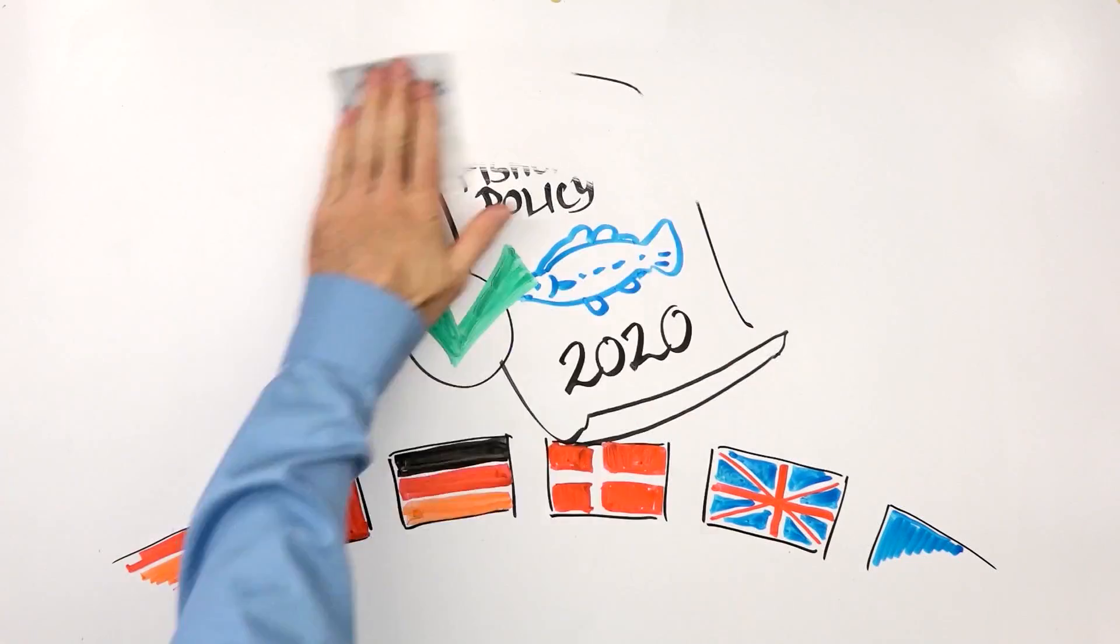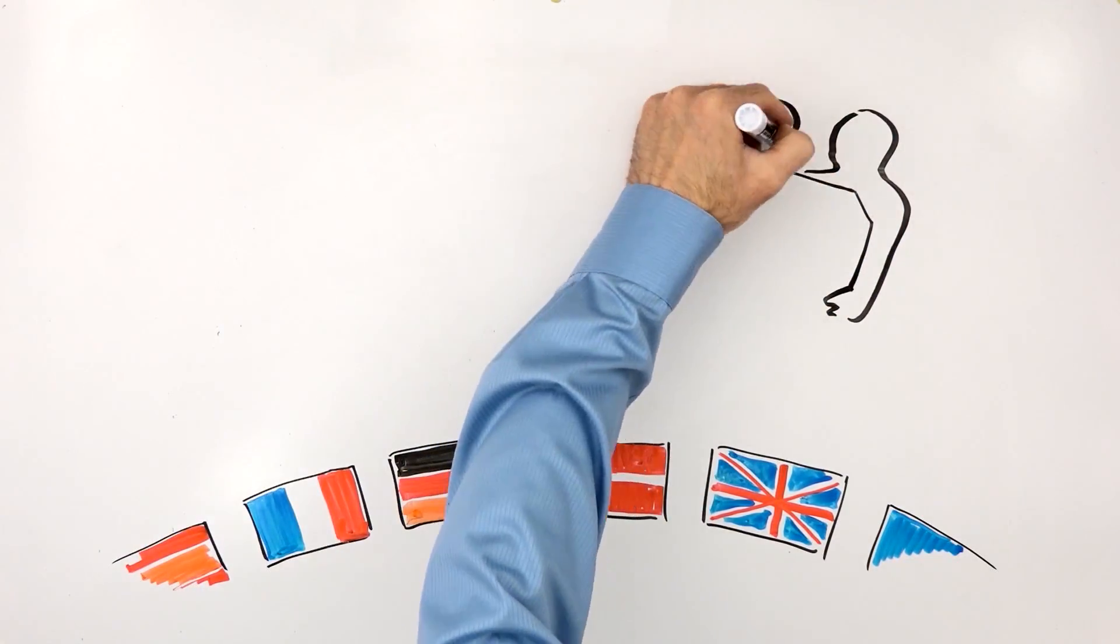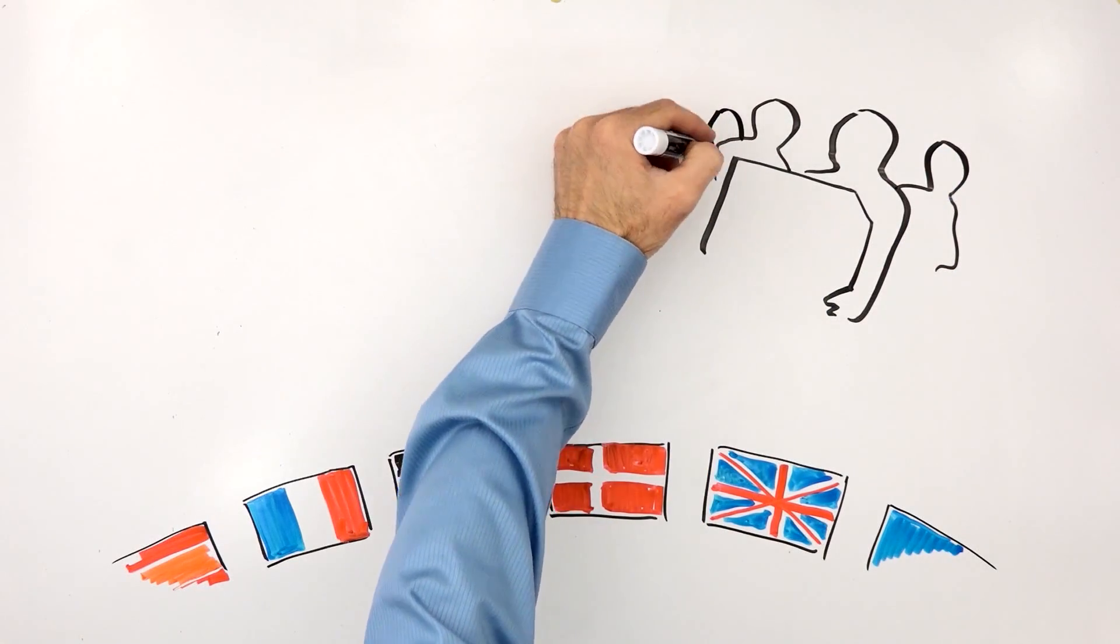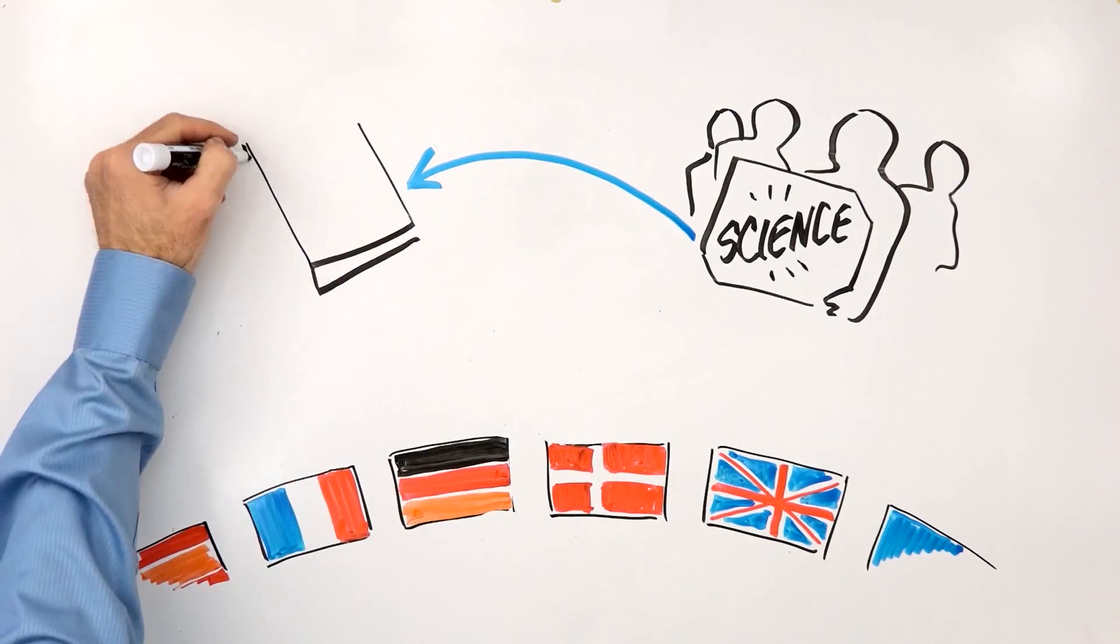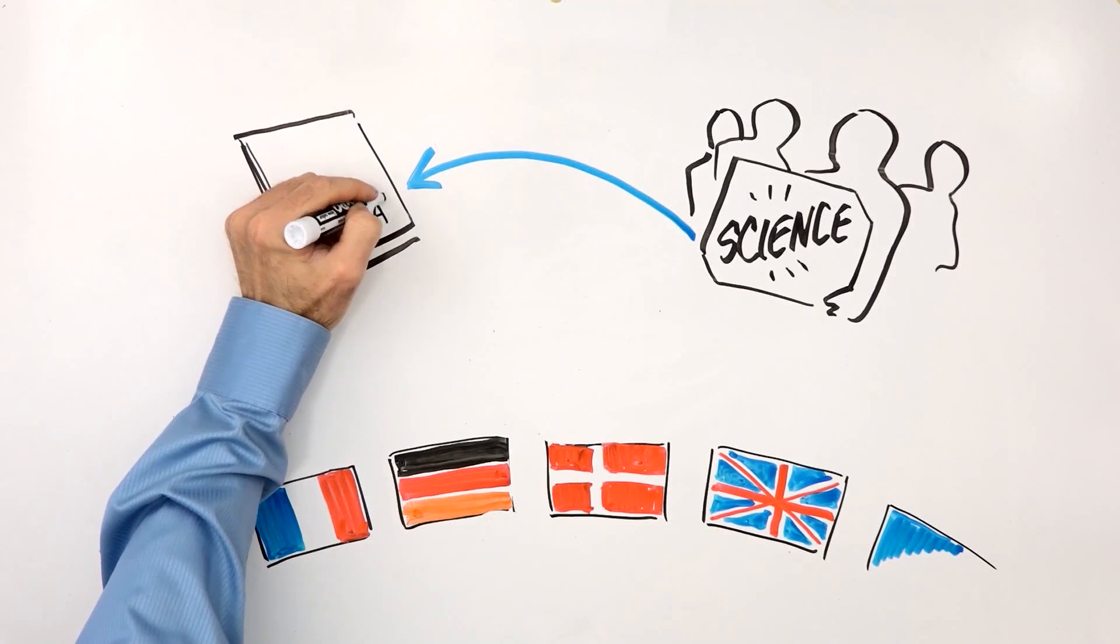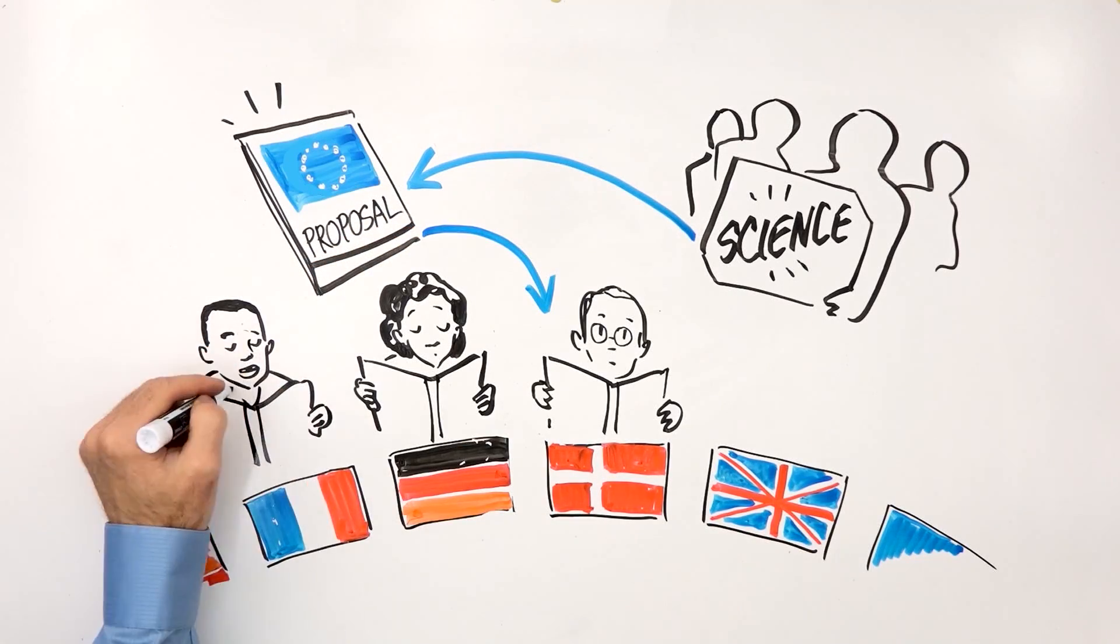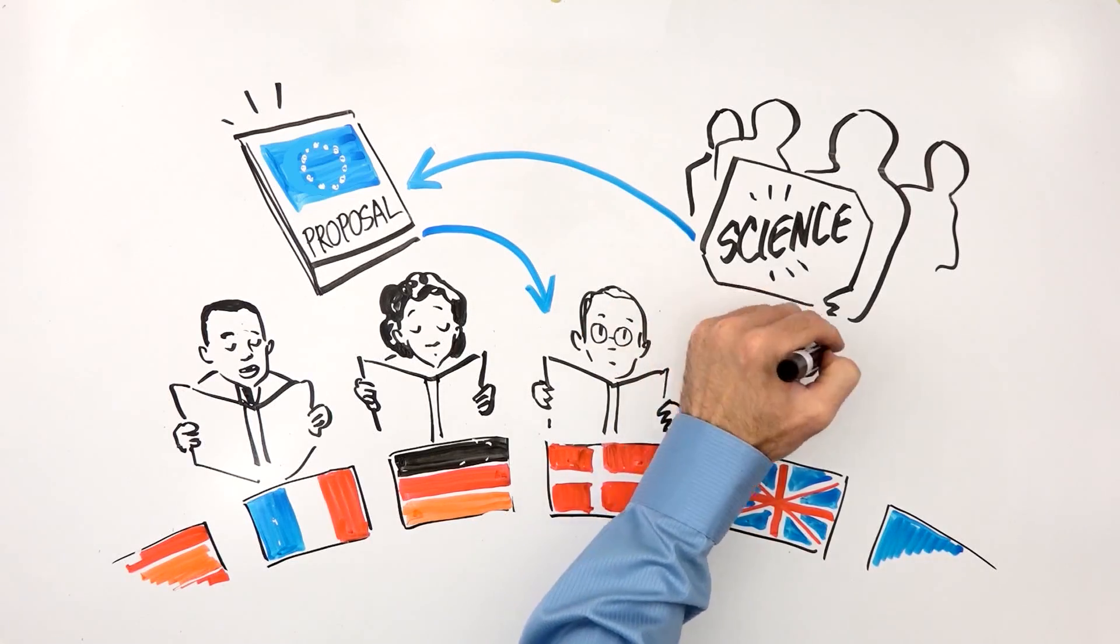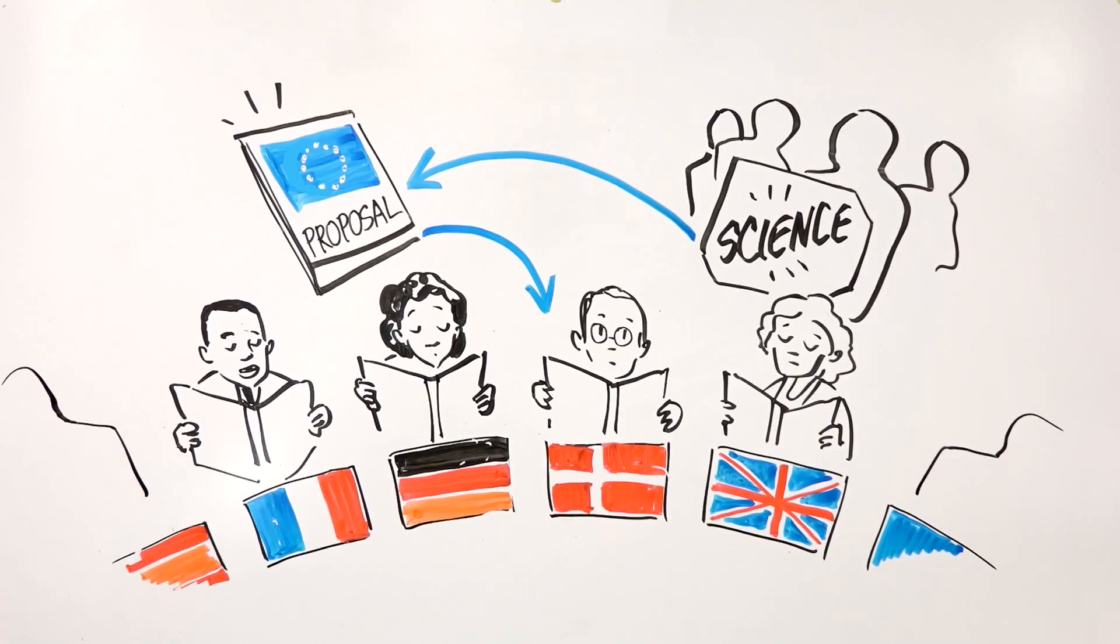So why isn't the problem solved already? Each year, the European Commission asks the International Council for the Exploration of the Sea to provide scientific advice for the following year's fishing limits. Then, the European Commission publishes its proposals during the autumn. The final decision is made behind closed doors by all EU fisheries ministers at the Fisheries Council meetings at the end of the year.